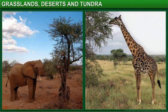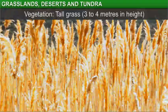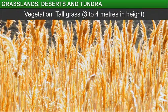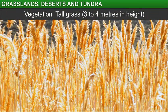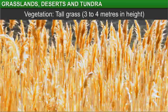Seasonal drought and natural fires prevent woody shrubs and trees from growing here. Additionally, whatever few shrubs or trees manage to grow are eaten off by the large mammals. The grass in tropical grasslands can grow up to a height of 3 to 4 meters.